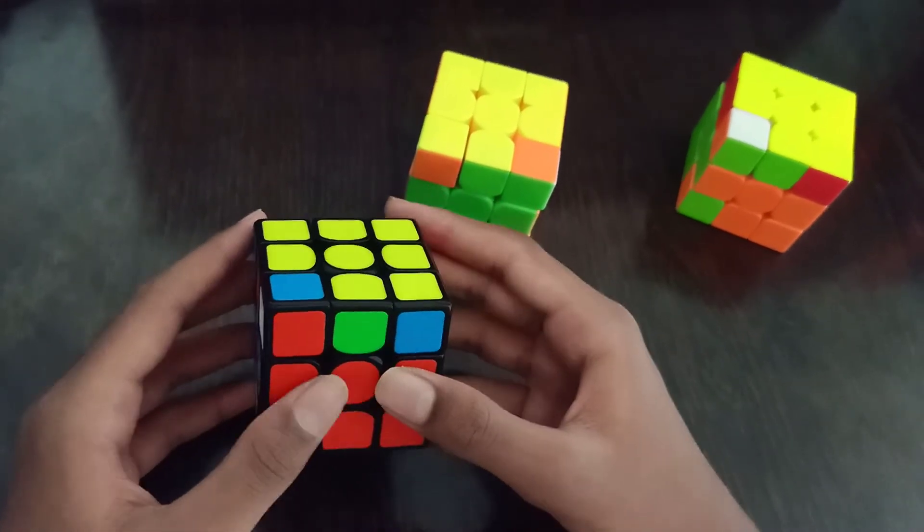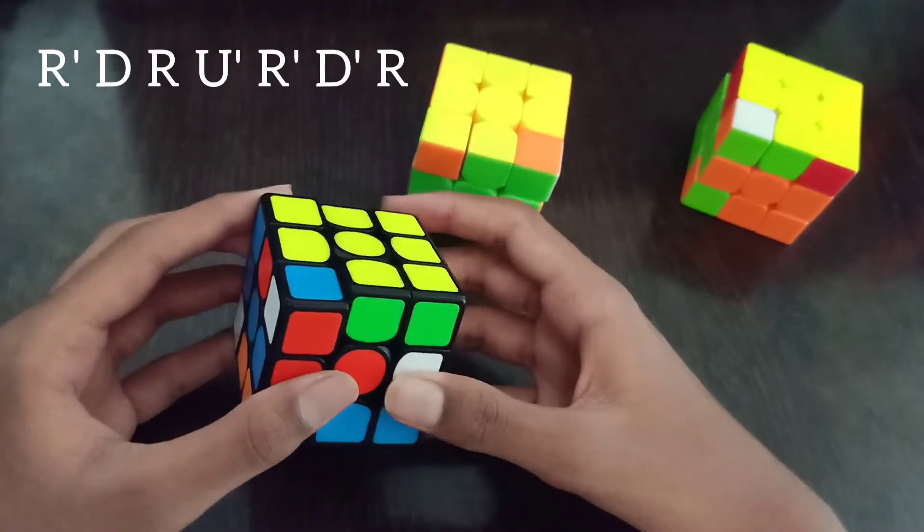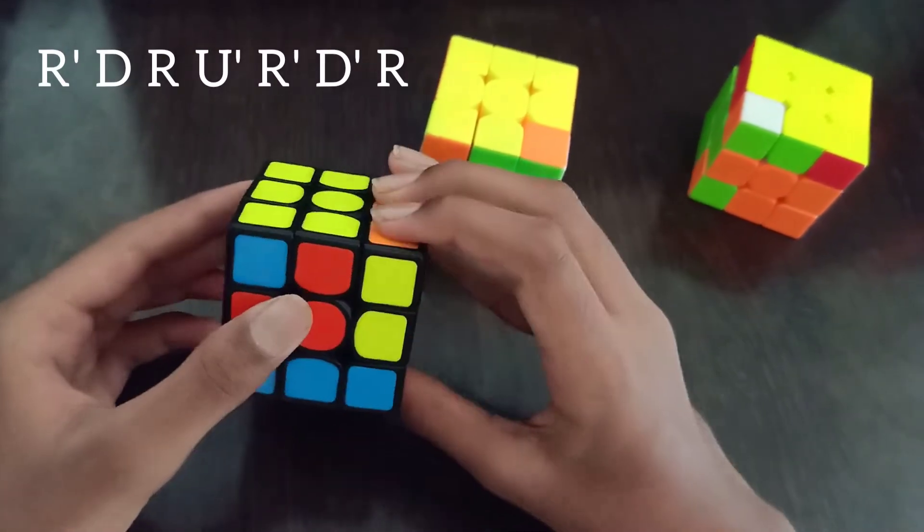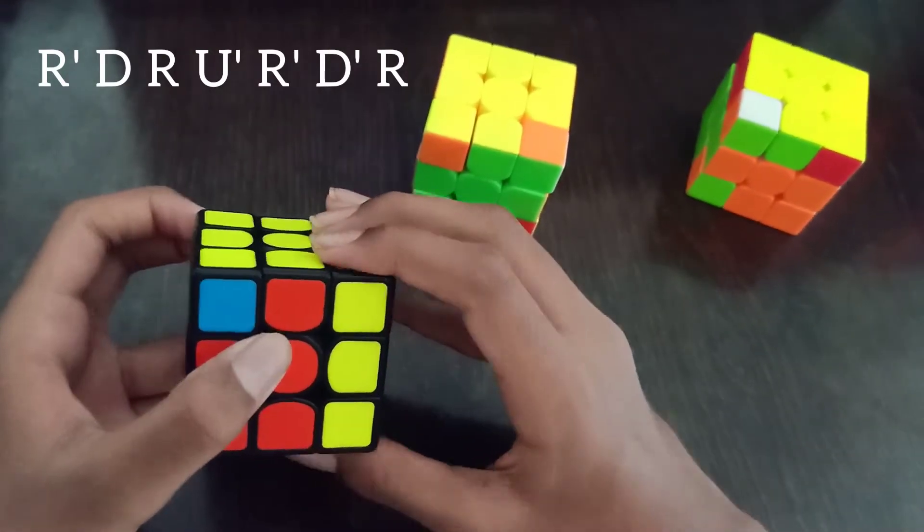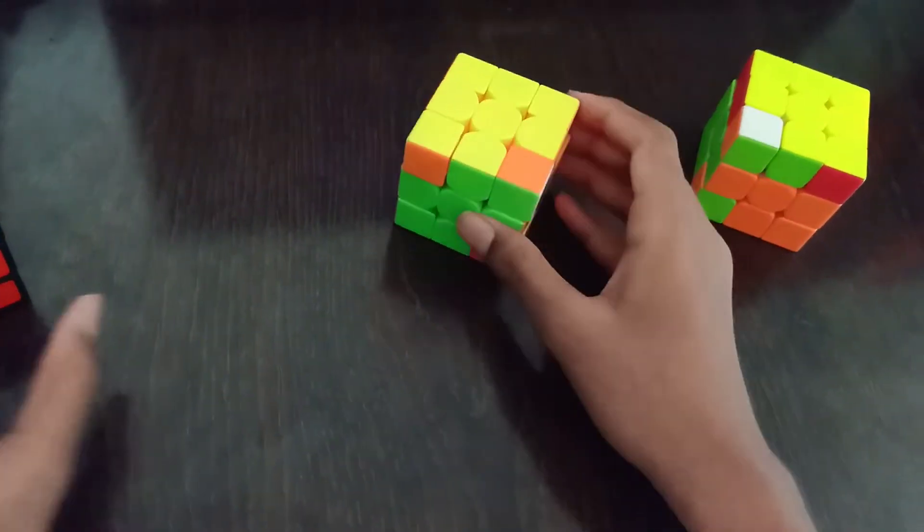To do this CLS case, we do R' D R U' R' D' R and that would force an OLL skip.